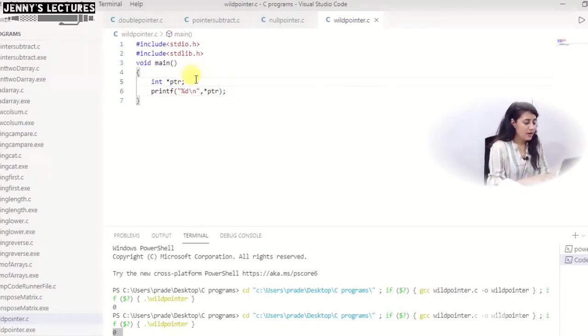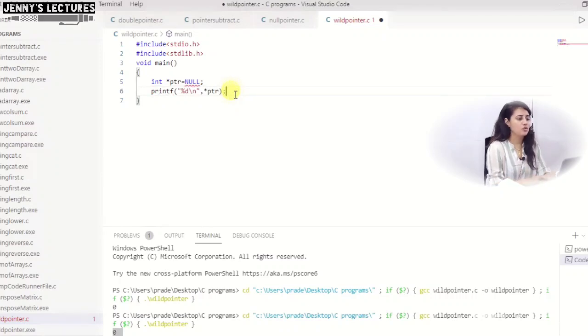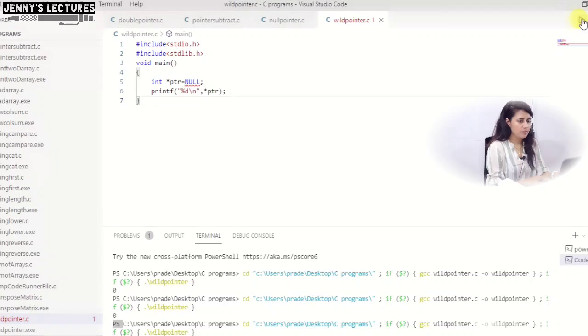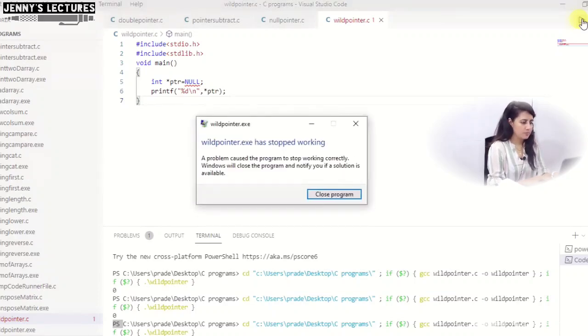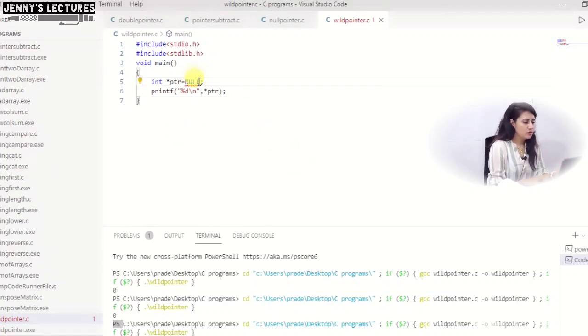Now better to do what here? What you can do? You can write here null, so make it null pointer rather than leaving it uninitialized pointer. And we cannot dereference a null pointer, I have told you. So better not to dereference it because your program is going to crash now. See, if you dereference a null pointer, the exe file has stopped working.